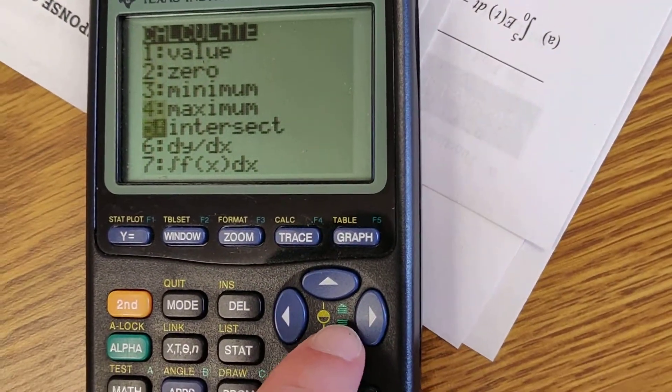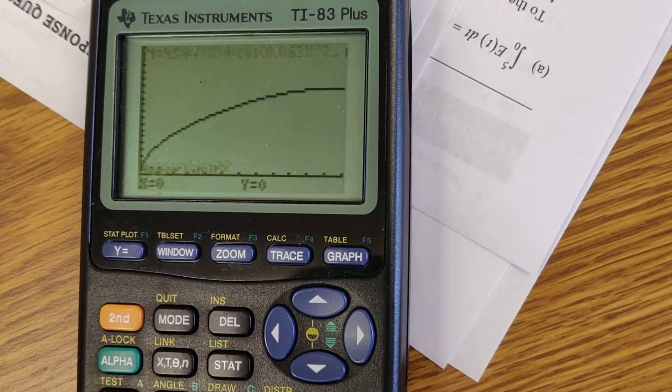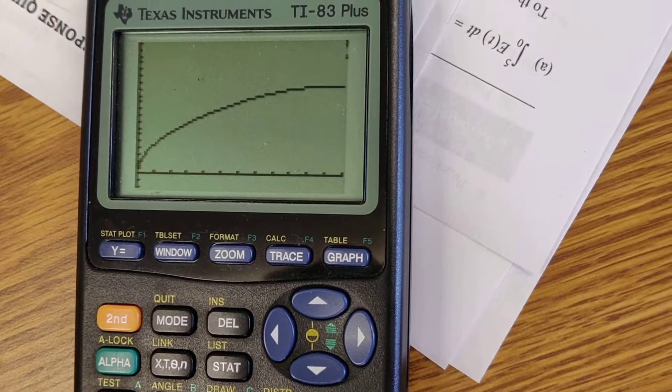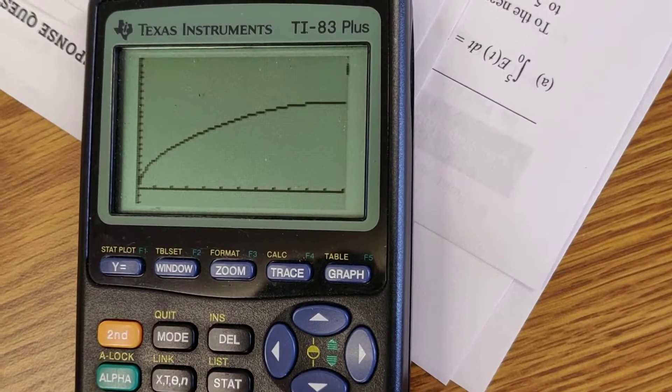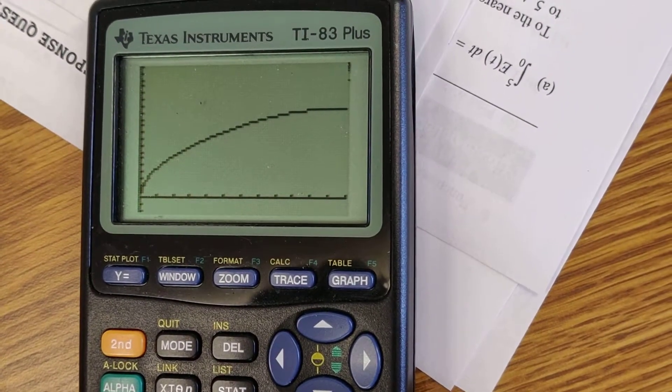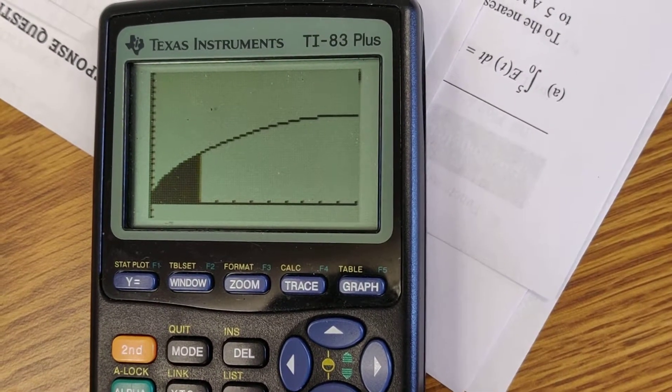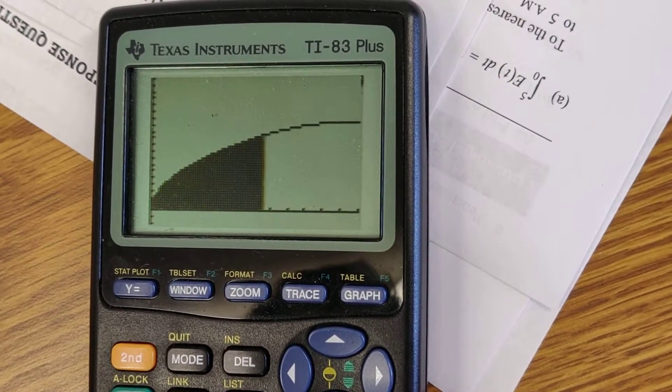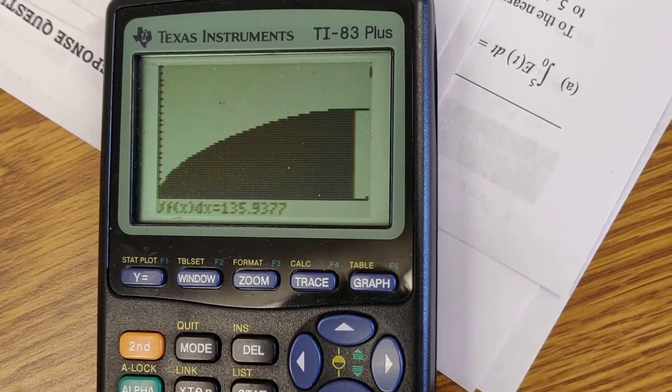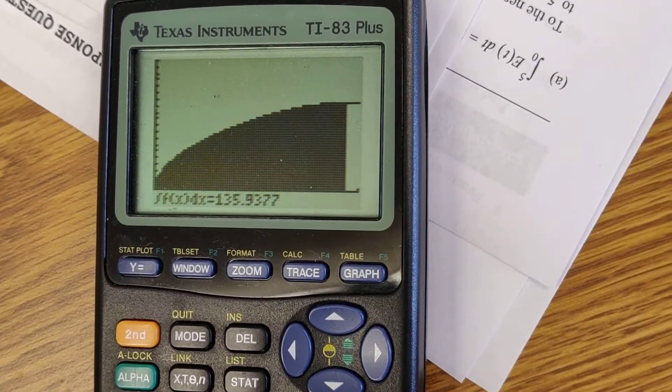Second, calculate, symbol for the antiderivative. Lower limit is 0, upper limit is 2.8. Go ahead calculator, find the area. It's taking its time, it's not a big deal. And here it goes. Just like last time, we should get exactly the same number. It is, it's 135.938.